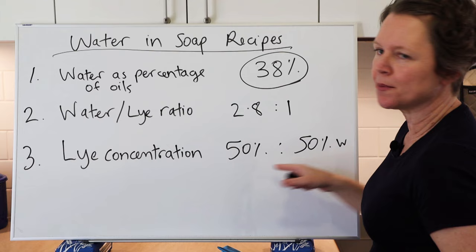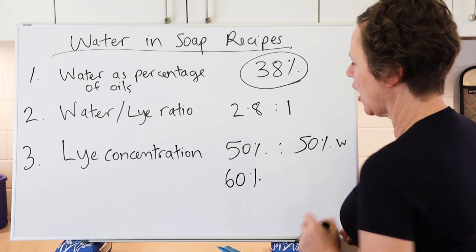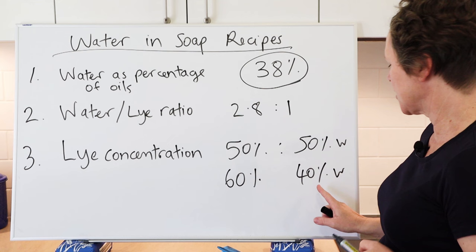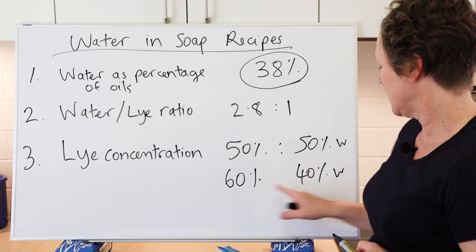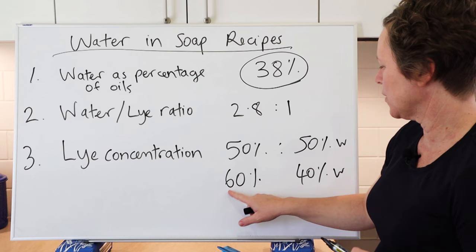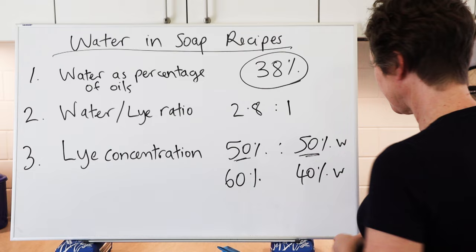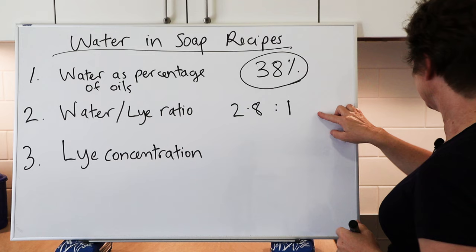For example, if you tried to use a 60% lye concentration, that would mean only 40% water in the lye solution — which isn't enough water to dissolve that much lye. So 50% water is the minimum, and 50% lye is the maximum.